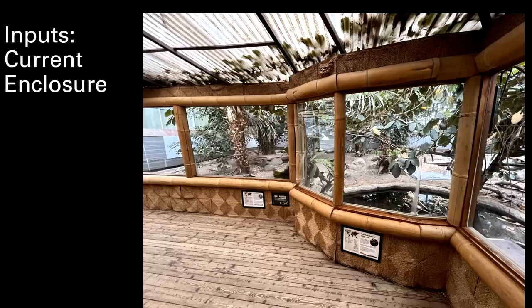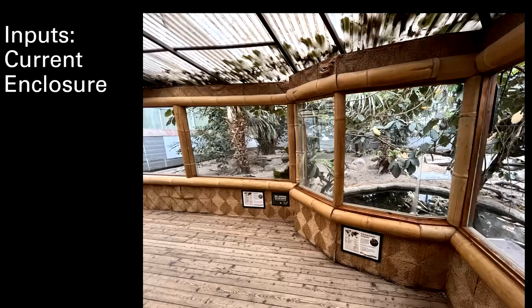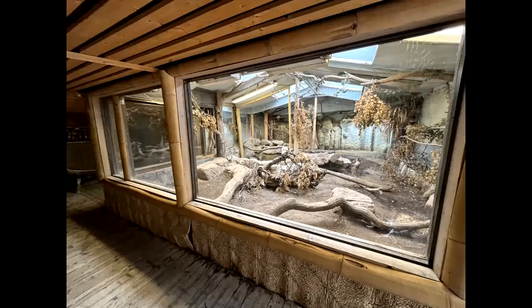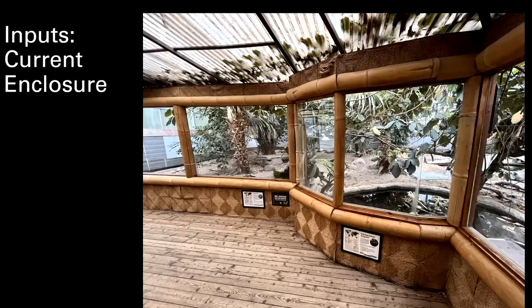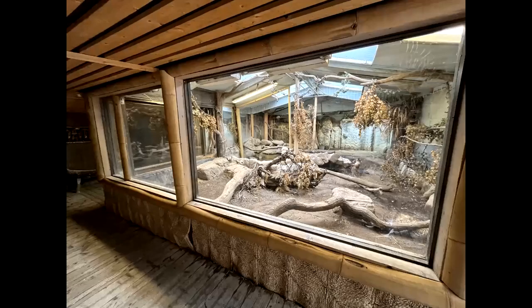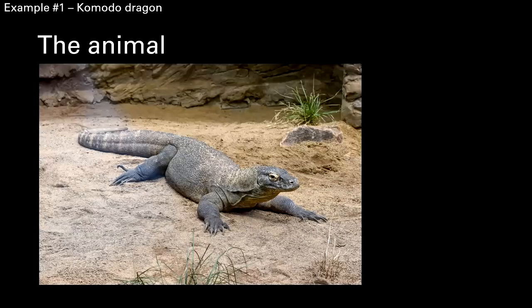This is an example enclosure for a Komodo dragon exhibit — an indoor exhibit, which is extensive. Komodos do get quite a bit of space; they tend to be charismatic as lizards, so they get larger, more extravagant enclosures than other reptiles. This one has indoor and outdoor space, lots of natural substrate, lots of live plants, and is pretty expansive.